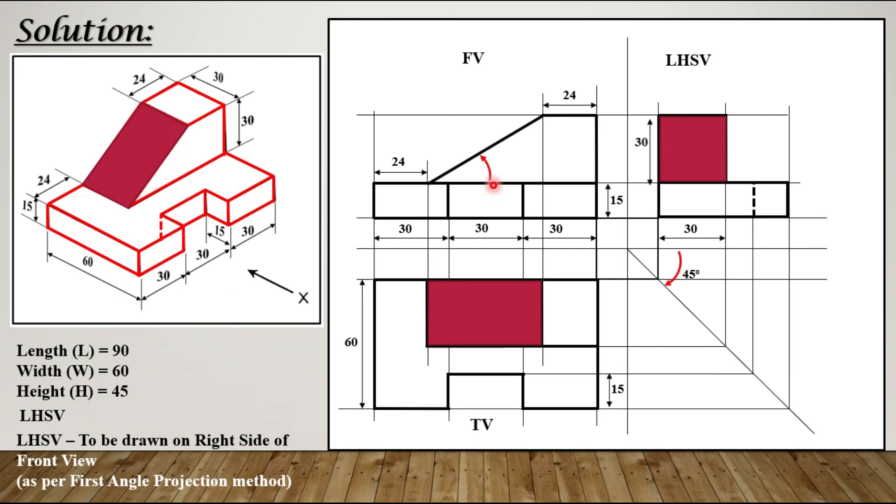Flat surfaces which are horizontal or vertical they will be seen only in one view whereas inclined surfaces will be visible or seen in two views and the view in which the surface is not seen will be showing its inclination.